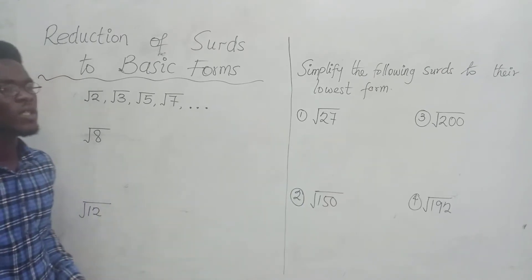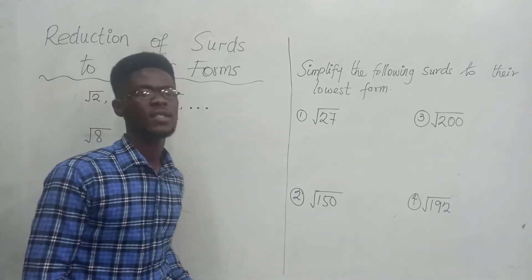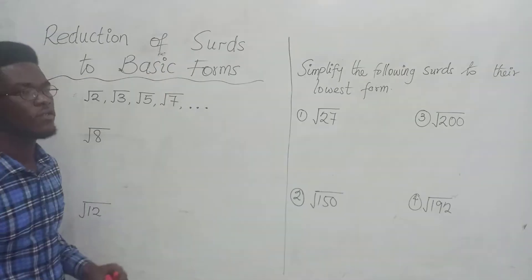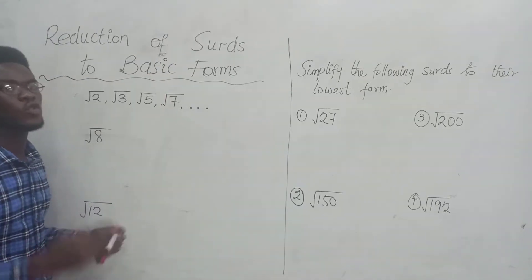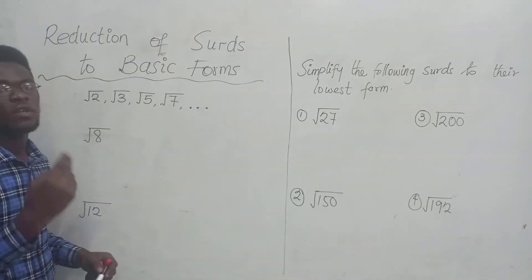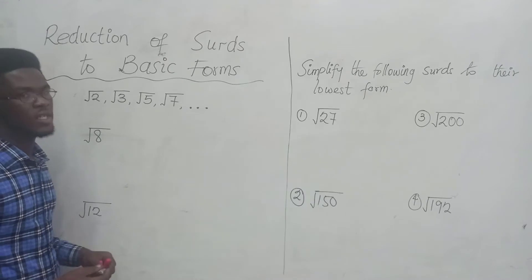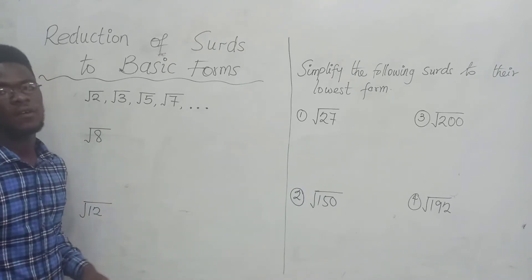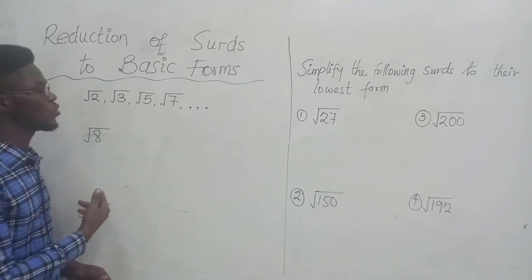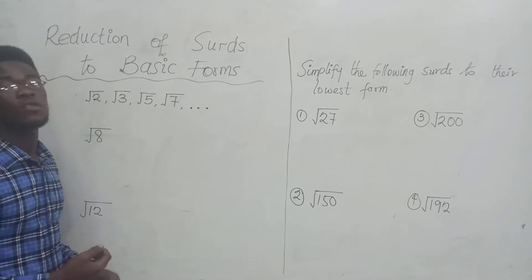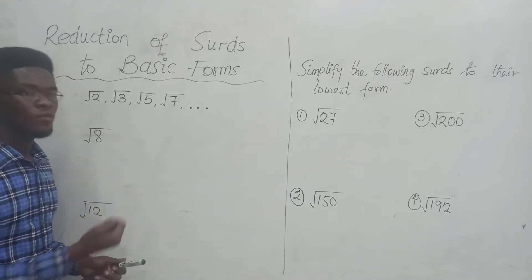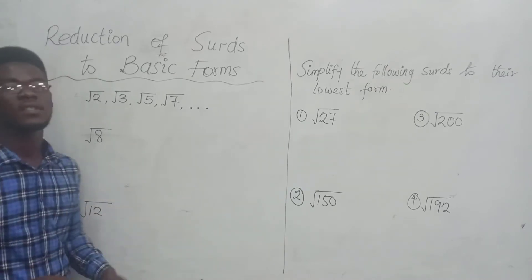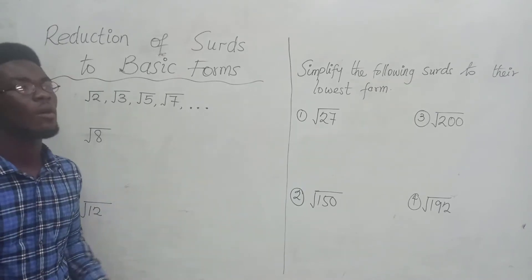So if you want to reduce surds to their simplest form or basic form, you are going to look for two numbers, one of which is a perfect square, that when you multiply together you get the number under the radical. In this case, you have to look for two numbers, one of which is a perfect square, that when you multiply gives you 8.